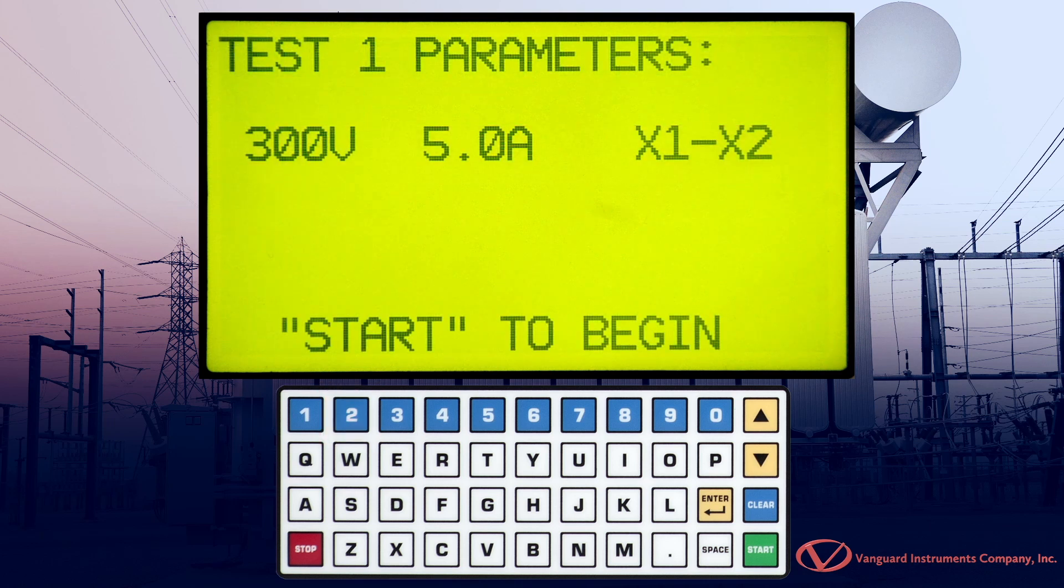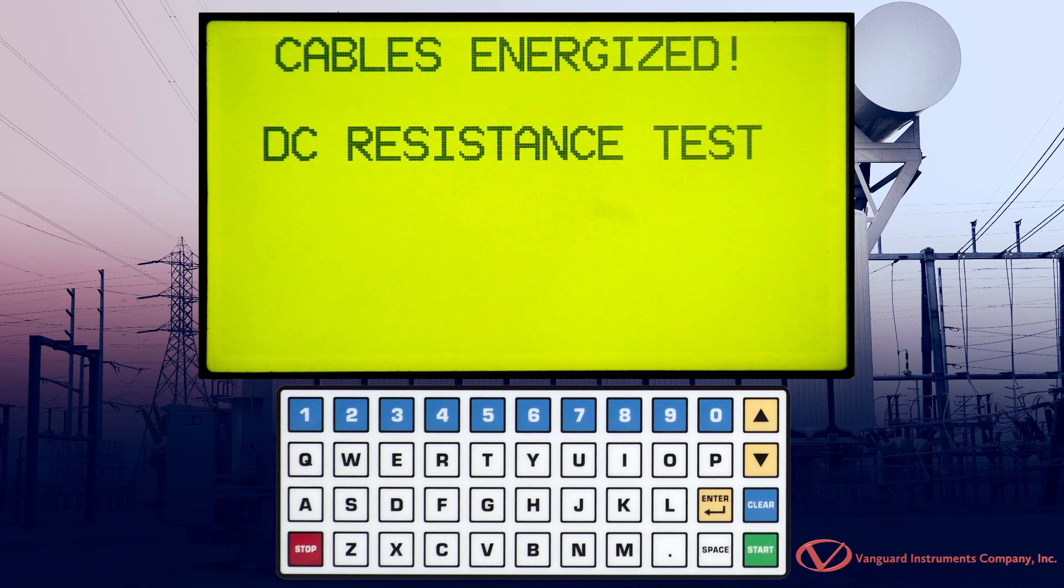Now, a summary of the test parameters will be displayed. Press the Start key. The EZCT-2000C will first perform the DC resistance test and display the results.